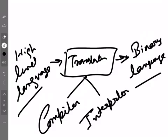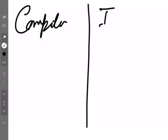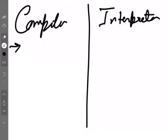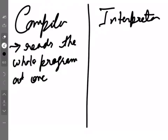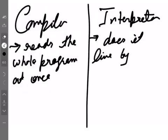Now, the translators — these two terms you have heard many times before, but let me tell you again what they mean. Translators are generally of two types: compiler and interpreter. What does a compiler do? It reads the whole program at once and then converts it. So a compiler reads the whole program at once and translates it to machine language, and it does it line by line.